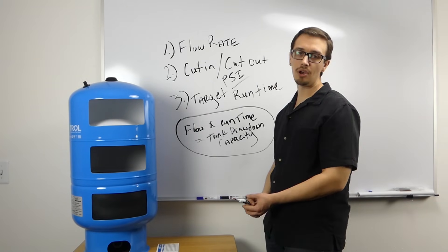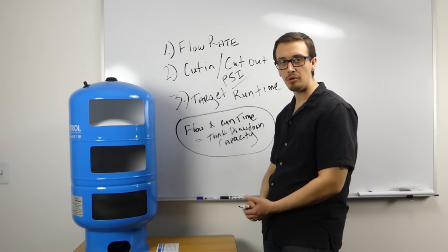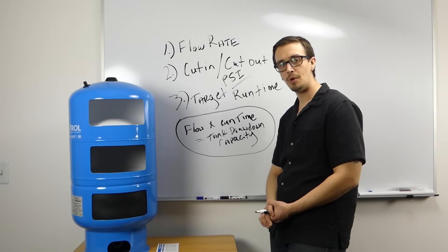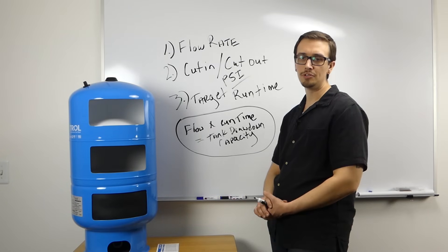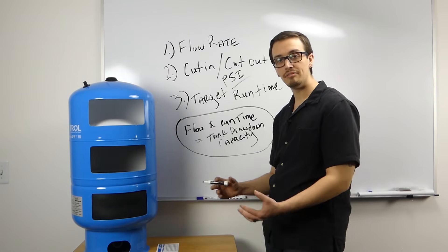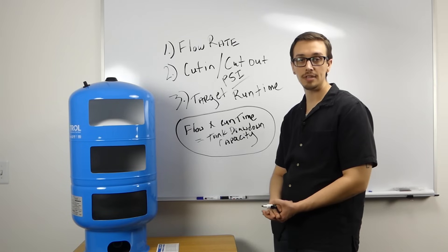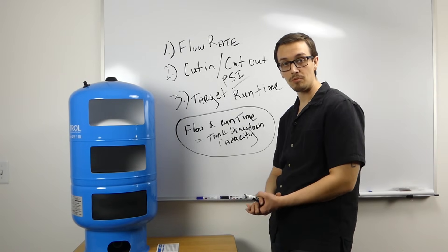Once your flow rate gets beyond about 10 gallons per minute up until about 20 gallons per minute, the target number increases to about one and a half gallons of drawdown per gallon per minute rating on the pump.